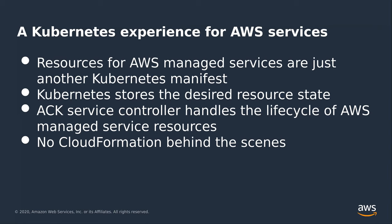Like all custom controllers in the Kubernetes universe, Kubernetes stores the desired resource state. When Alice writes a Kubernetes manifest for an RDS DBInstance kind to the Kubernetes API using kubectl apply, the API server stores what Alice requested as the desired resource state for her DB instance. Then the ACK service controller — the Kubernetes custom controller for that service — handles the lifecycle of that managed service resource. In the case of the RDS ACK service controller, it will call CreateDBInstance in the RDS API and manage the lifecycle of the DB instance for the Kubernetes user.